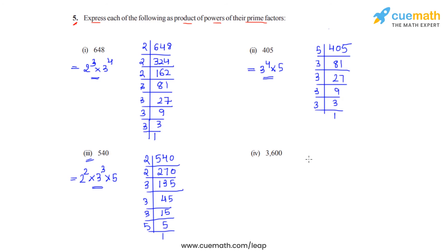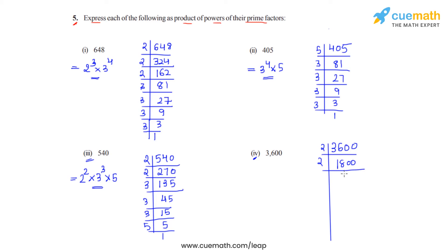We will now be solving the fourth part which is the last part of this question. So we have to prime factorize 3600. We will be first dividing it by 2 and that gives us 1800. That can again be divided by 2, that gives us 900. 900 on division by 2 gives us 450. 450 being again divided by 2 gives us 225, which can now be divided by 5.